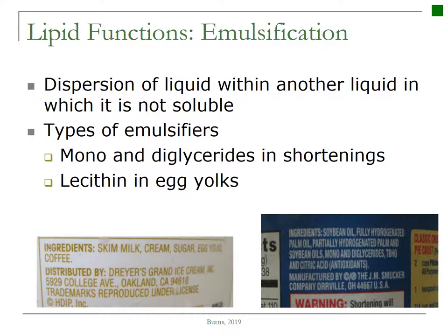The next function of a lipid is emulsification. An emulsion is a dispersion of a liquid within another liquid in which it is not soluble — these are two liquids that usually do not mix. The different types of emulsifiers commonly seen in lipid-based products are the mono and diglycerides in shortening, as you can see in the shortening label on the bottom right-hand corner, and then the lecithin in egg yolks. The label on the left-hand side is for ice cream, and you can see that the fourth ingredient is egg yolks.